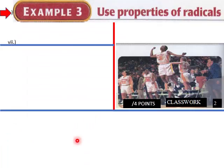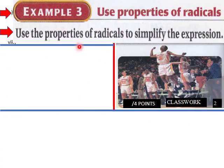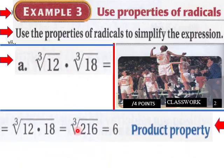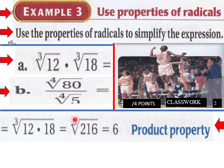Okay, let's get into some of this. Using Properties of Radicals, simplify this expression. We could multiply 12 times 18 to get this number here, which is 216. The third root of 216 would equal six, and we use the product property to get that one.